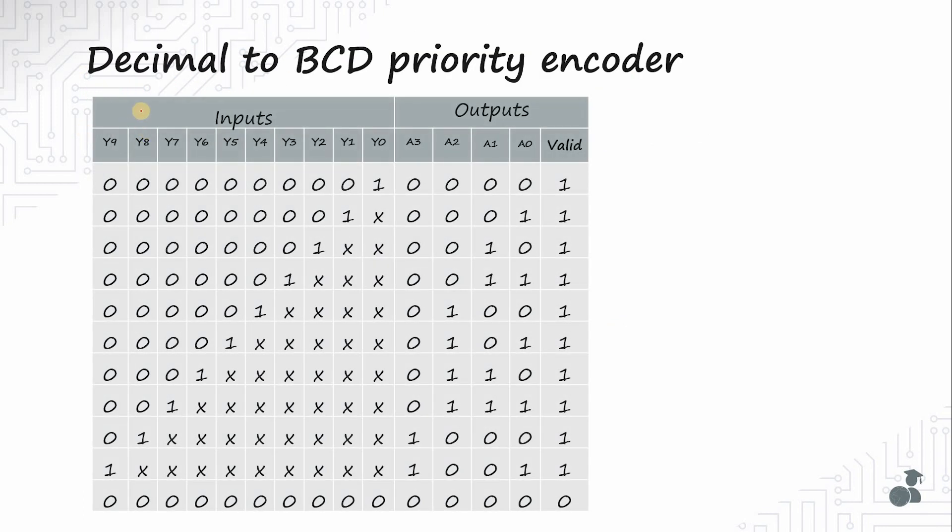The truth table of priority encoder is as follows. In a priority encoder, a particular bit is given priority. Here we have given highest priority to digit 9 or key 9. So if key 9 is pressed it doesn't matter if any other key is pressed or not. These are don't cares. Even if they are 0 or 1, it detects it as 9. Similarly if key 8 is pressed, it doesn't matter if other keys are pressed or not, it detects it as 8.